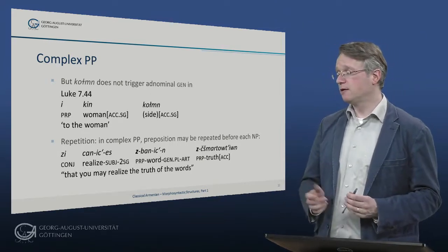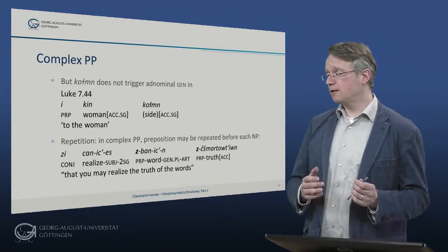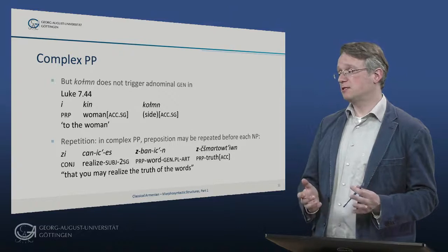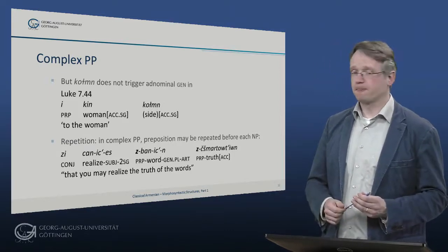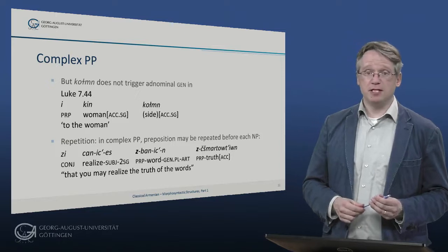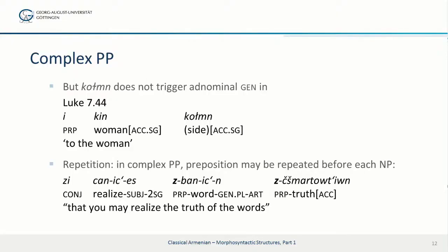So have a look at this example in Luke 7:44 where we have i kin korm — this simply means 'to the woman'. And korm is not marked for case — it's probably simply the accusative case if we want to assign a case — the same case we find with kin, which is dependent on the preposition e that can have an accusative case following. In complex prepositional phrases, the preposition, which usually precedes the whole NP, may be repeated before every single element, as we see in the next example — 'so that you may realize the truth of the words' — the preposition is repeated before every single element of the nominal phrase.